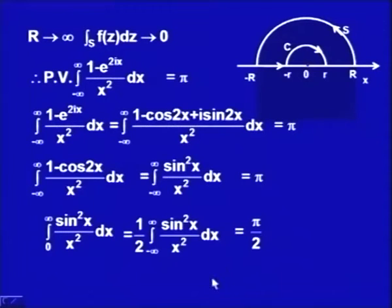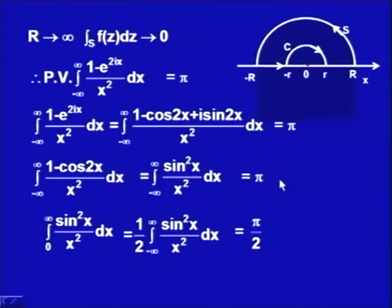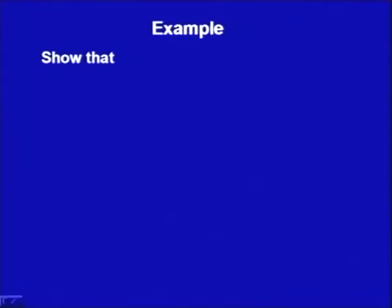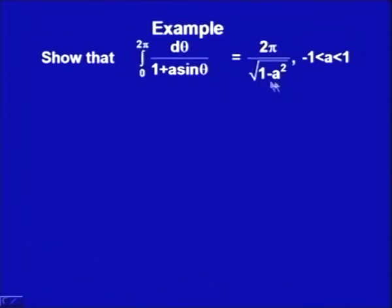Now, here we had applied residue theory even though all standard methods were not directly applicable — the pole on the real line was of second order. But using the same lines and the modified contour approach, we could still establish this formula. We had also used residue theory for definite integrals. Let us do one more example: show that ∫₀^(2π) dθ/(1 + a sinθ) = 2π/√(1−a²) for −1 < a < 1.